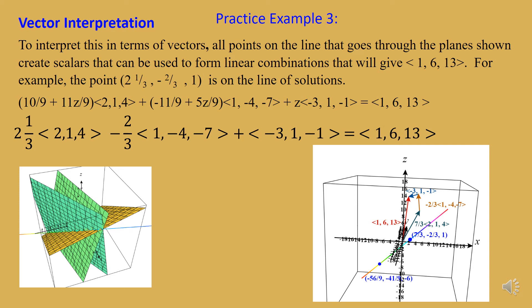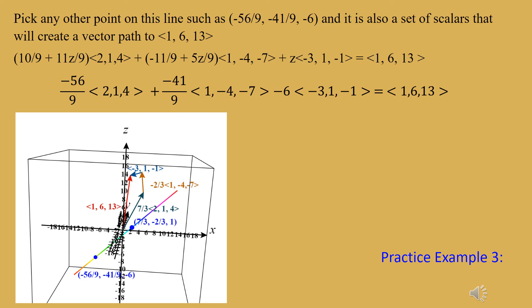In the vector interpretation, any point on the solution line can serve as scalars to create a linear combination of coefficient columns equal to the vector 1, 6, 13. For example, letting z equal 1 gives x equals seven-thirds and y equals negative two-thirds. Using seven-thirds times the first vector, minus two-thirds times the second, plus one times the third gives the vector 1, 6, 13. You could also let z equal negative 6, giving x equal negative 56 ninths and y equal negative 41 ninths, and those also work as scalar multiples to produce 1, 6, 13.